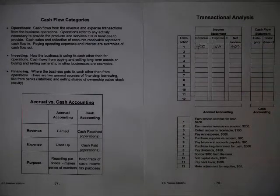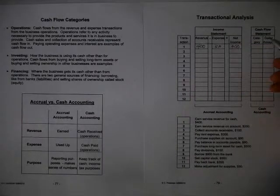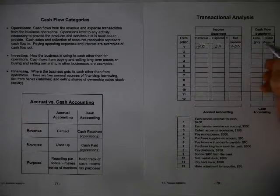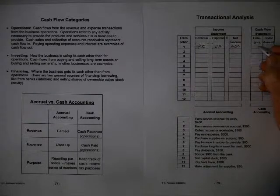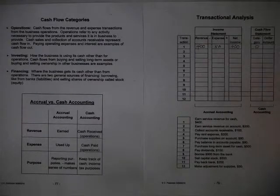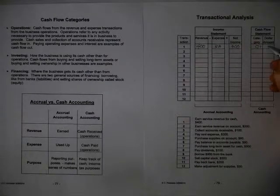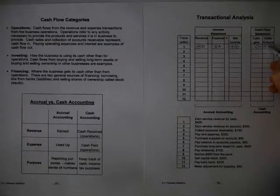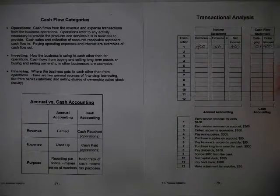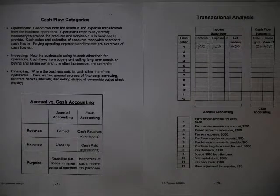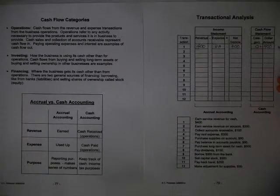Now let's see what the impact is on the cash flow category. First of all, it's going to be part of operations because we earned the money and it's going to be an O plus because you received $400, operations plus. So we'll put it over there. Now in this particular case, the transaction affected both the income statement and the cash flow statement.